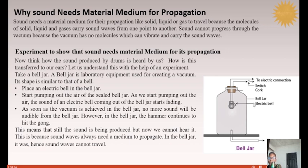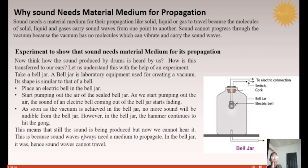The round ball of the bell is still moving left and right, so there should still be sound, but as we pump out the air the sound keeps fading. As soon as a vacuum is achieved in the bell jar, no more sound is audible. However, the armature continues to hit the gong — we can see it visually — but we hear nothing because the jar has been converted to a vacuum. Sound is still being produced but we cannot hear it, because sound waves always need a material medium to propagate.